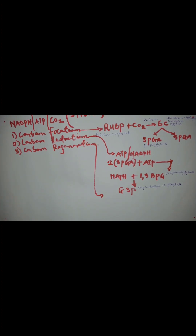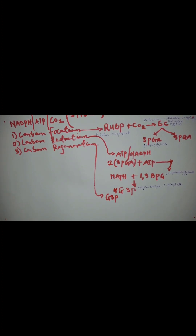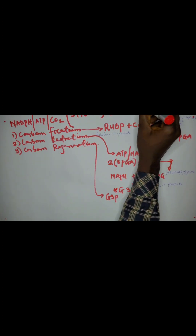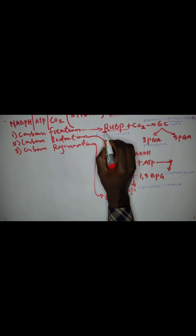In carbon regeneration, which is the last step, some molecules of G3P go on to make glucose, while others must be recycled to regenerate RuBP, because this is a cycle — the Calvin cycle. Since it is a cycle, anything we use at the beginning must be returned. We make use of RuBP in the stroma, so we must return it so that whenever this process needs to take place, RuBP will always be present. From G3P, we regenerate RuBP, and this process also requires ATP.